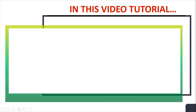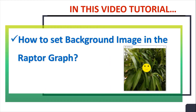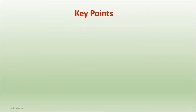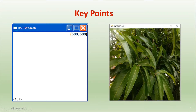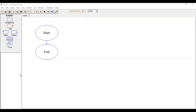In this video tutorial, we will see how to set a background image in Raptor Graph. By default, the Raptor Graph window comes with a white background. We will set a background image into the Raptor Graph window and then draw some geometric shapes on that window to create some animation. Let's use Raptor software and create a Raptor Graph window first.